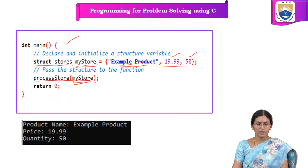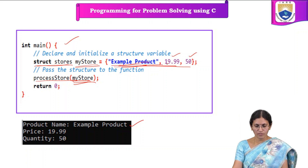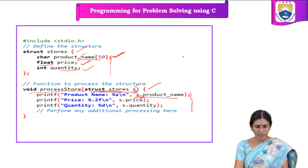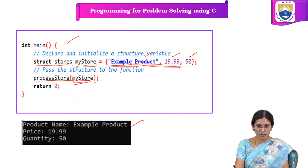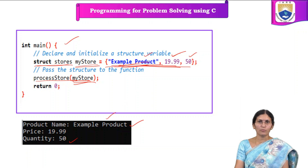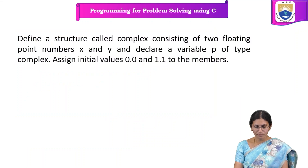When we execute this program, it will not prompt the user to enter any details because the values have been assigned statically — at compile time itself we have initialized the values: product name is 'example product', price is 19.99, and quantity is 50. In this way, we can pass the structure by value.